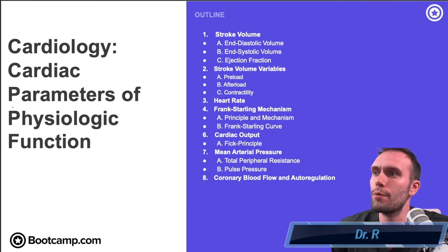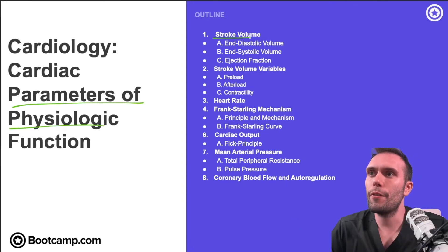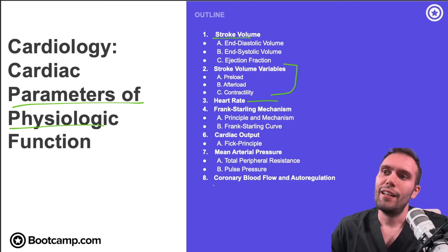Hey everybody, Dr. R here. In this video we're going to introduce some parameters of physiologic function. We'll talk about the stroke volume, some variables that are particularly high yield that influence the stroke volume. We'll talk about the heart rate, Frank-Starling mechanism, cardiac output, mean arterial pressure, and a little bit about coronary blood flow. So a lot to talk about, let's get started.